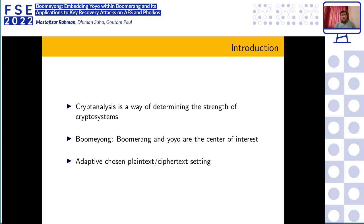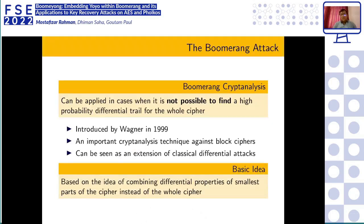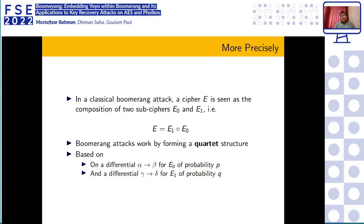Like the Boomerang attack and the YOYO attack, our new Boomerang attack is also based on the adaptive chosen plaintext model. The Boomerang attack occurs in the adaptive chosen plaintext/ciphertext setting and is based on the divide-and-conquer paradigm. The idea is that if we cannot penetrate the whole cipher using a differential attack, we compose two different differential trails and merge them to cover more rounds. Typically a cipher E is divided into two sub-ciphers E1 and E0, and by employing the Boomerang attack we try to find a quartet P1, P2, P3, P4 satisfying some properties.